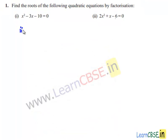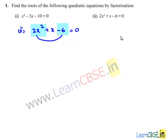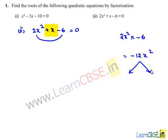Coming to the second bit, the given equation is 2x squared plus x minus 6 equals 0. The product of the first term and the last term is 2x squared multiplied by minus 6, which is minus 12x squared. We need two terms such that their product equals minus 12x squared and their sum equals plus x. The factors can be 4x and 3x. Minus 4x plus 3x gives minus x, but we need plus x, so we use plus 4x and minus 3x, which gives plus x.